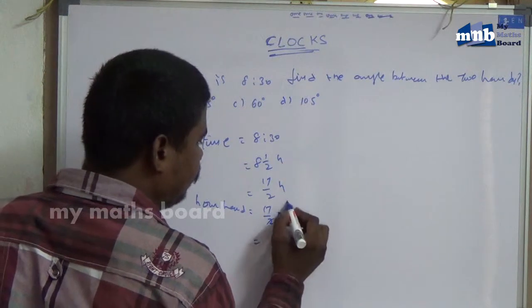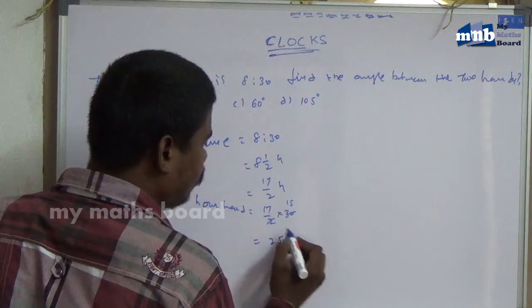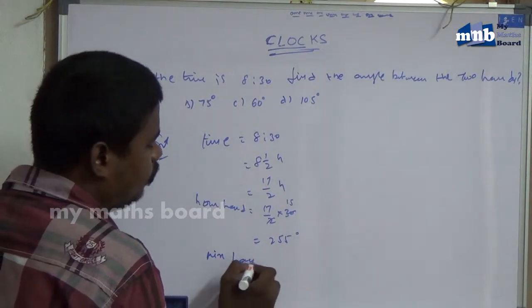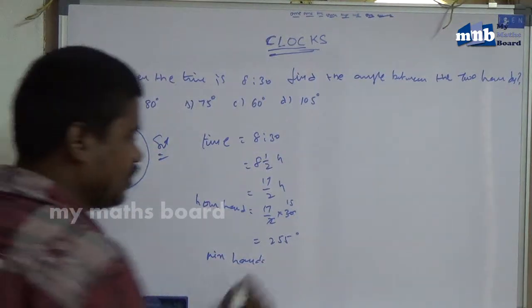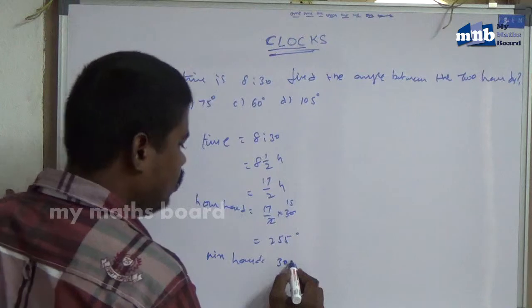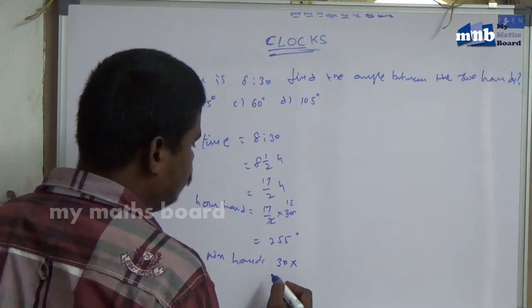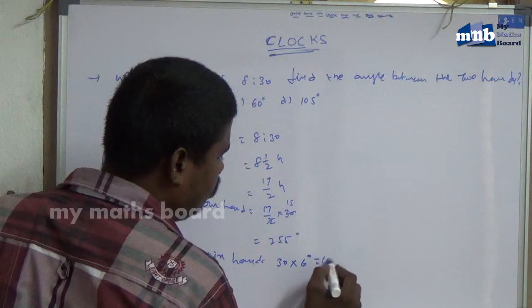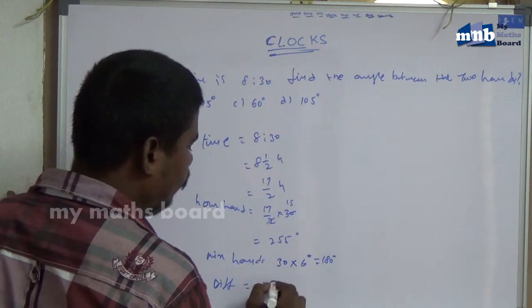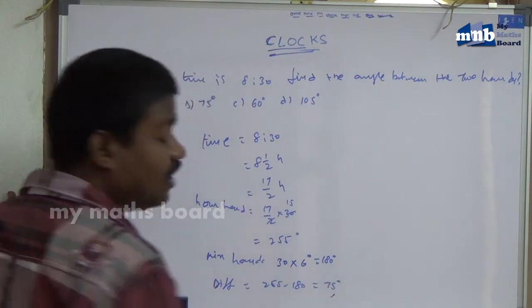That means the hour hand is at 255 degrees. The minute hand rotates 6 degrees per minute. So, 30 minutes into 6 degrees equals 180 degrees. The difference is 255 minus 180, which gives 75 degrees as the answer.